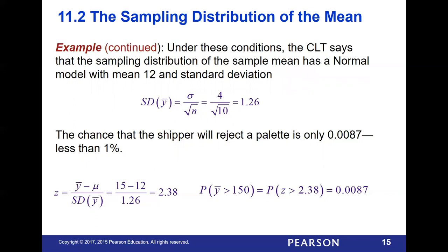The chance that the shipper will reject a pallet is only 0.0087, less than 1%. We take our limit of 15 pounds minus our mean of 12, divided by the standard deviation of 1.26, to get a Z score of 2.38. Then we convert that Z score to a P value using Excel — don't do all the math manually, just use Excel to save yourself the work.